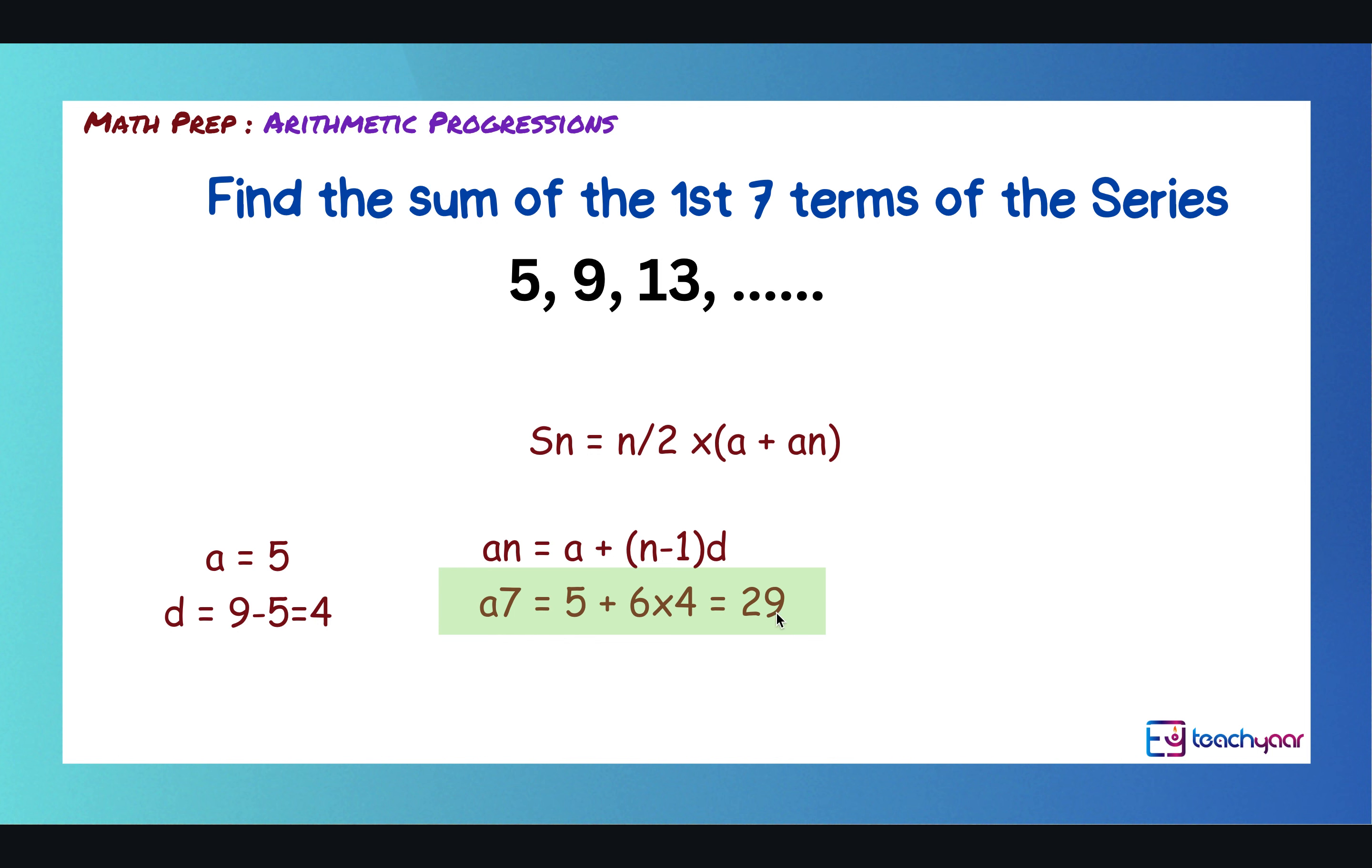Now, to get the sum of the first seven terms, you say S7 is equal to 7/2 times 5, which is the first term, plus 29, which we have just computed. So, now 29 plus 5 is 34. 7/2 times 34 is 119. So, that is the sum of the first seven terms of this arithmetic progression.